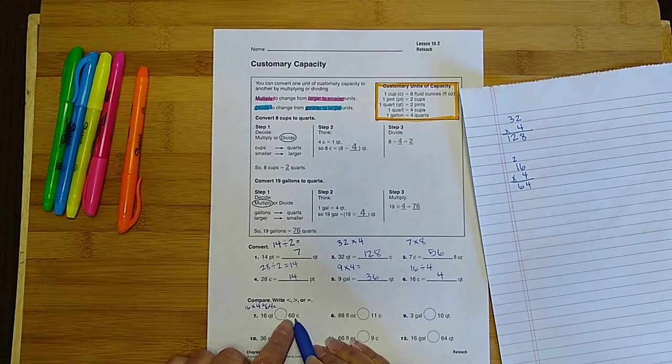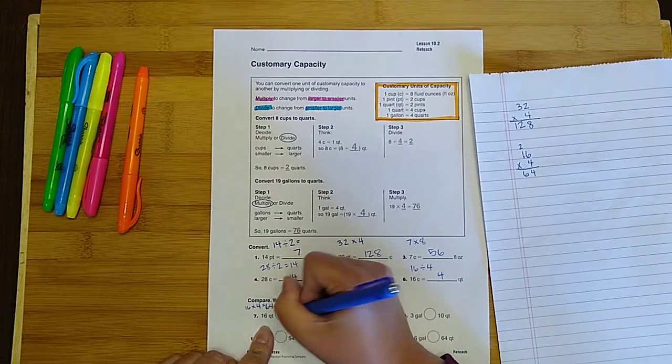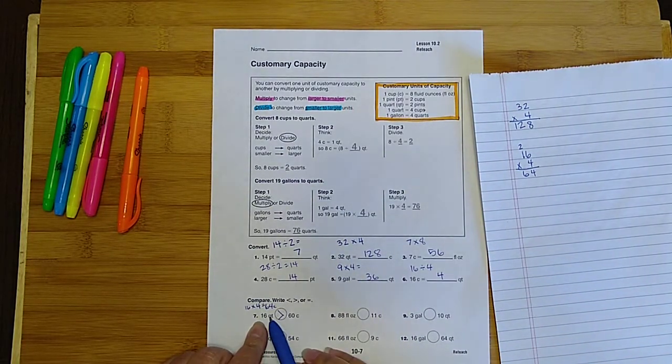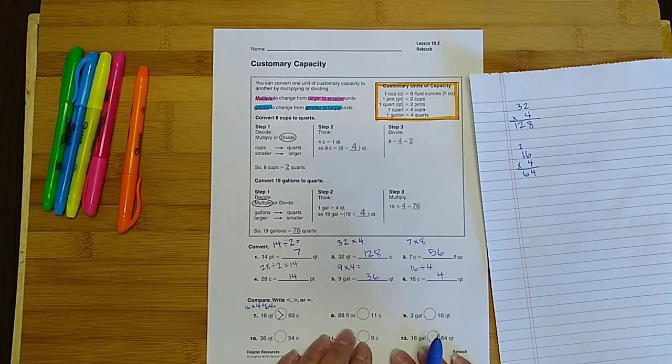And on this side I have 60 cups. So which one's larger? Definitely the 64. So I want to put the greater than symbol, because 16 quarts is greater than 60 cups. All right.